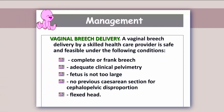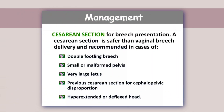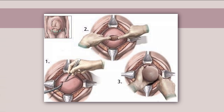A vaginal breech delivery by a skilled healthcare provider is safe and feasible under the following conditions: complete or frank breech, adequate clinical pelvimetry, fetus is not too large, no previous cesarean section for cephalopelvic disproportion, and flexed head. If external cephalic version and normal delivery are not possible, cesarean section is recommended — particularly in cases of double footling breech, small or malformed pelvis, very large fetus, previous cesarean section for cephalopelvic disproportion, or hyperextended or deflexed head.